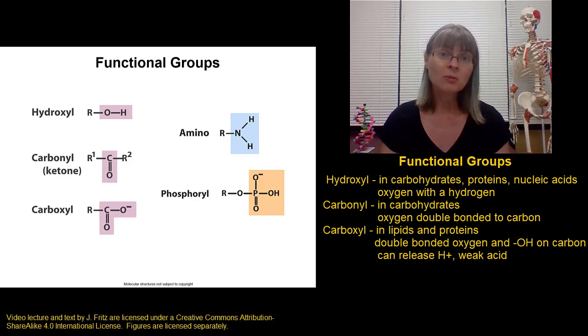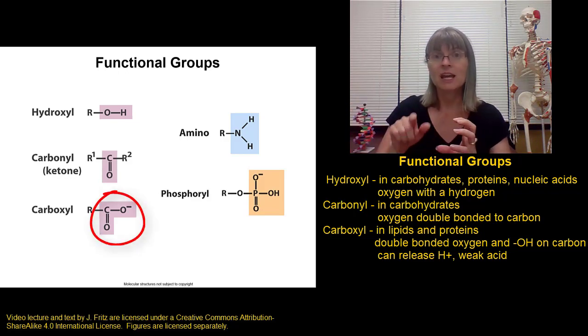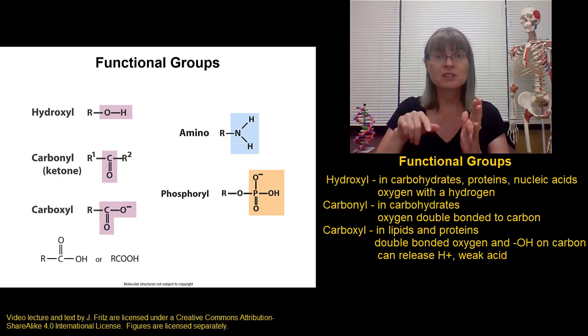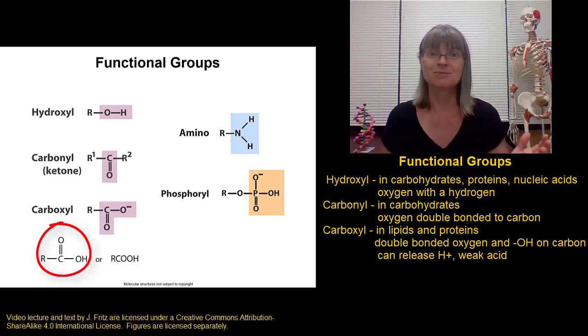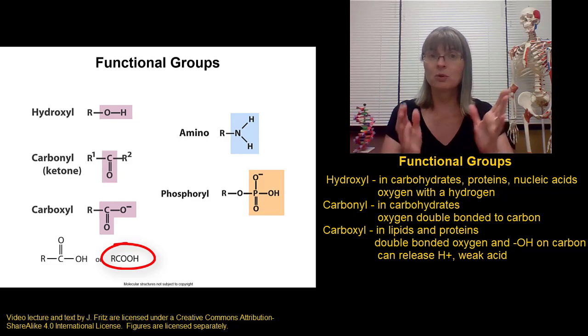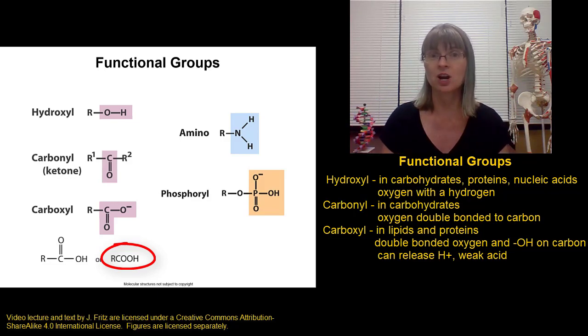Because of this, sometimes we see a carboxyl group written, as we see here, with a carbon, double bonded oxygen, and the O with a negative. That means it took the electron from the hydrogen and the hydrogen ion is just floating around. Or sometimes we see it with the hydrogen written in. Either way is acceptable. Sometimes we even see carboxyl groups written out as COOH instead of showing where those oxygens are bonded to the carbon. So that's another thing to watch for and be able to recognize as a carboxyl group.